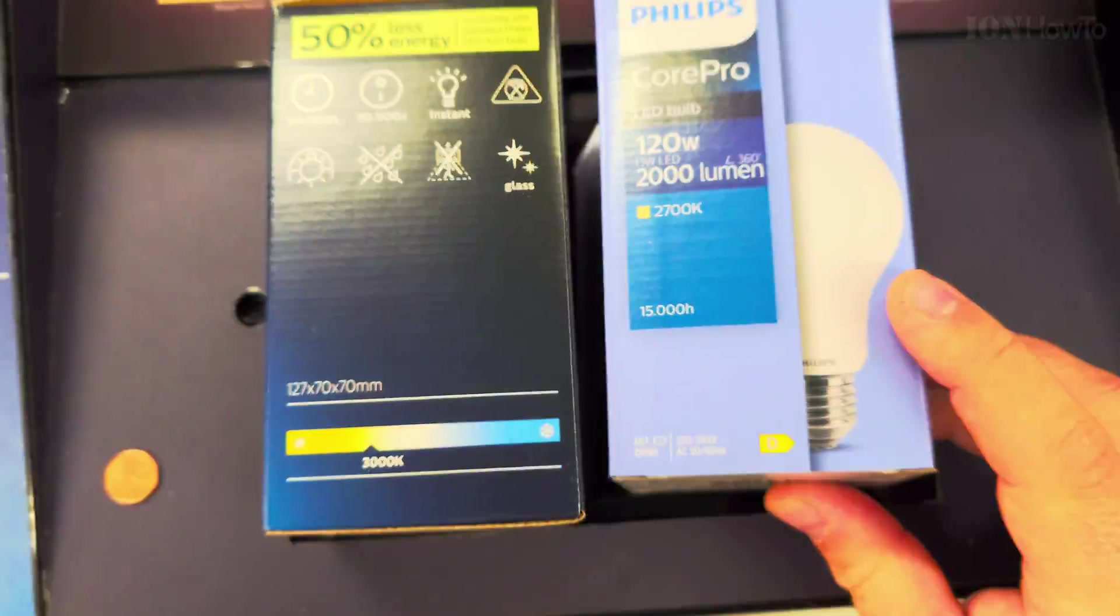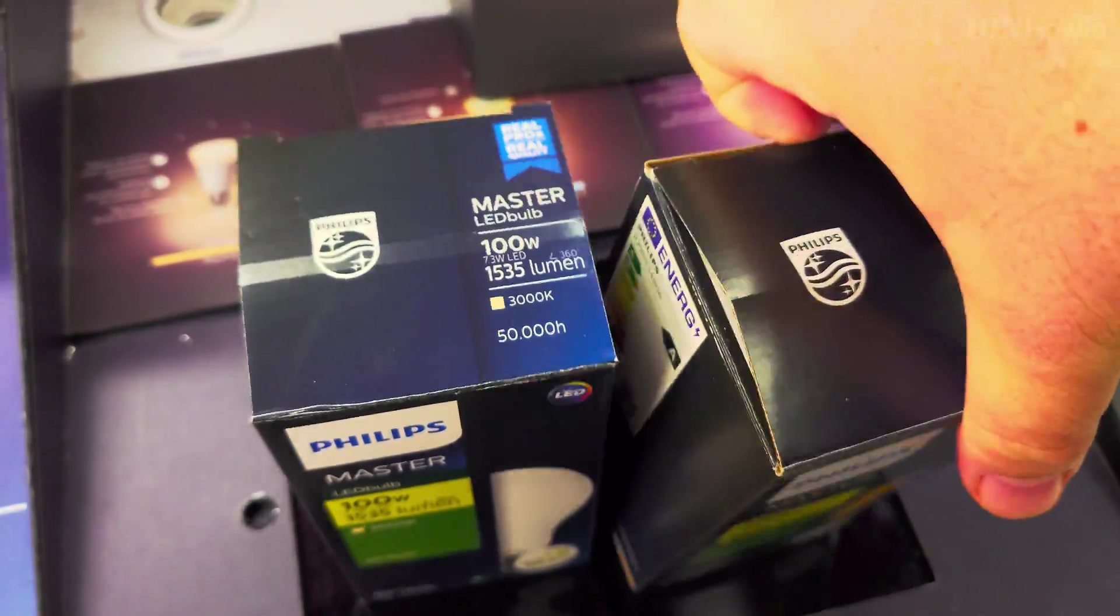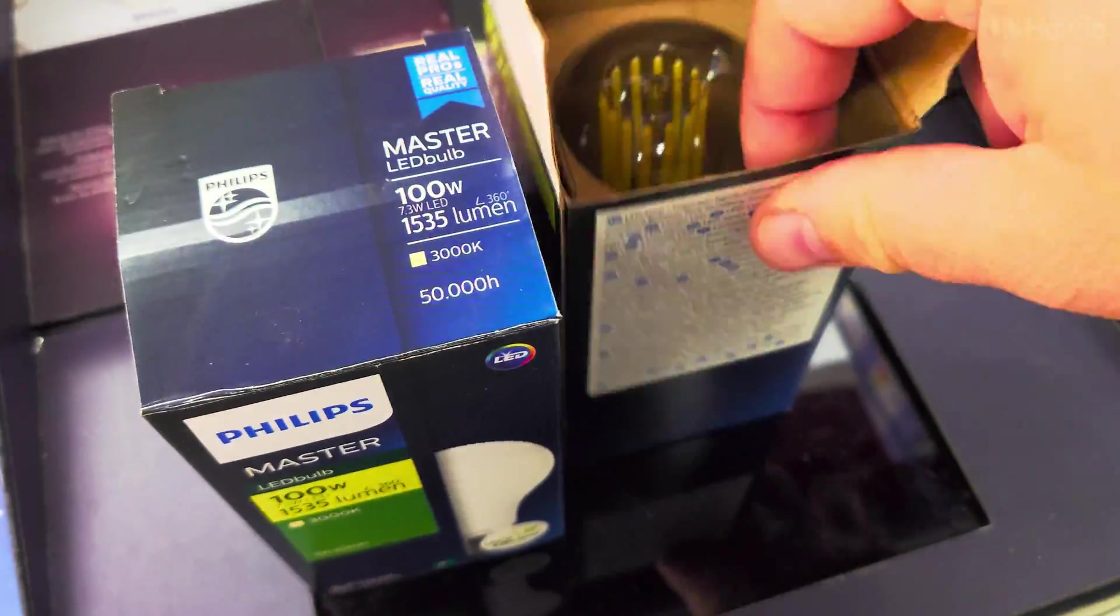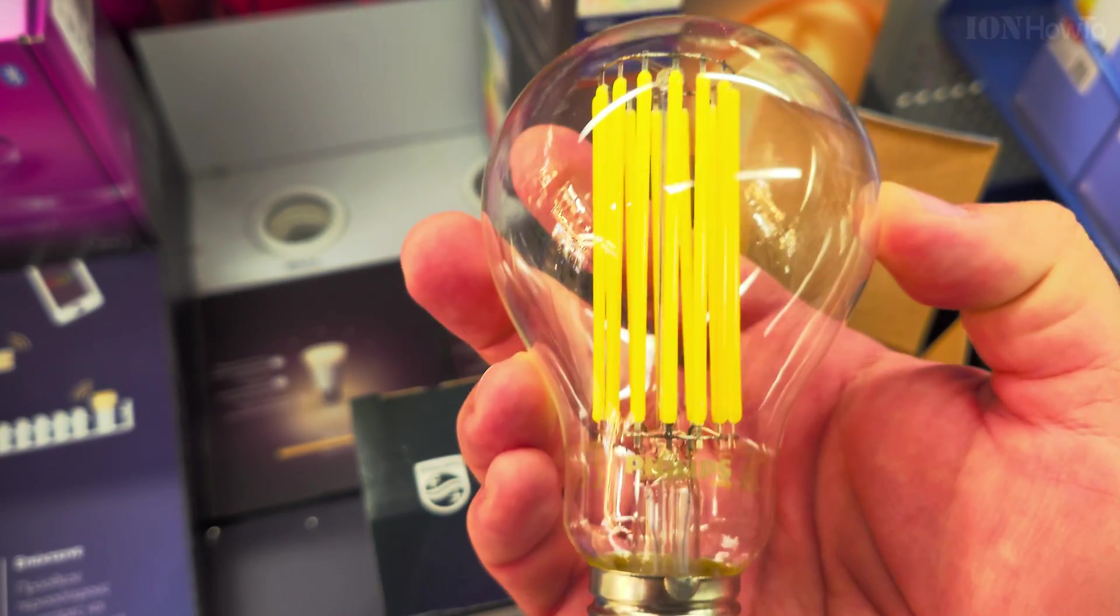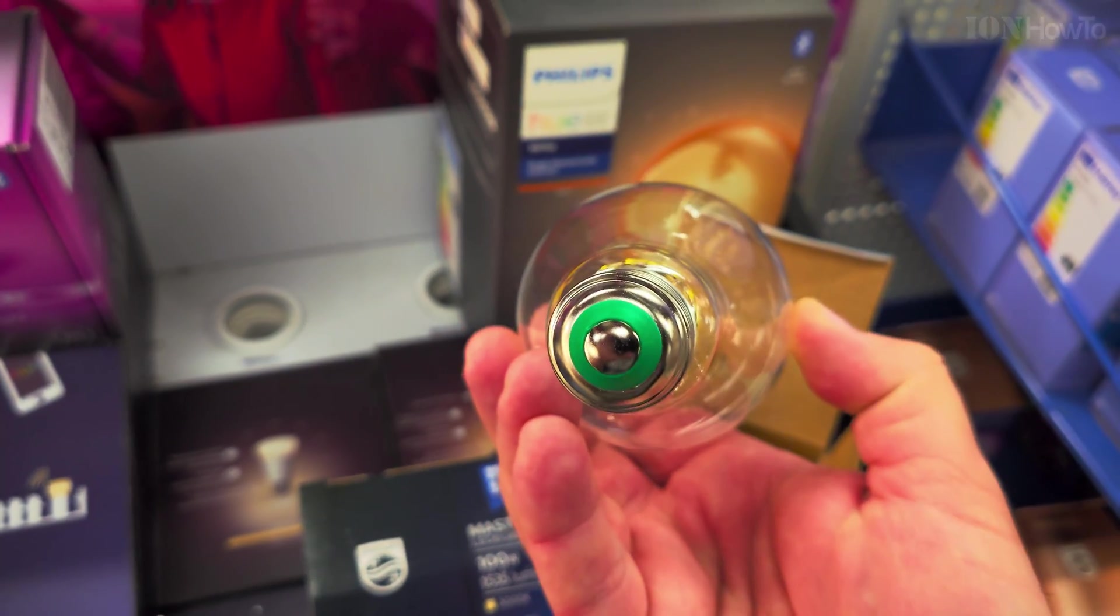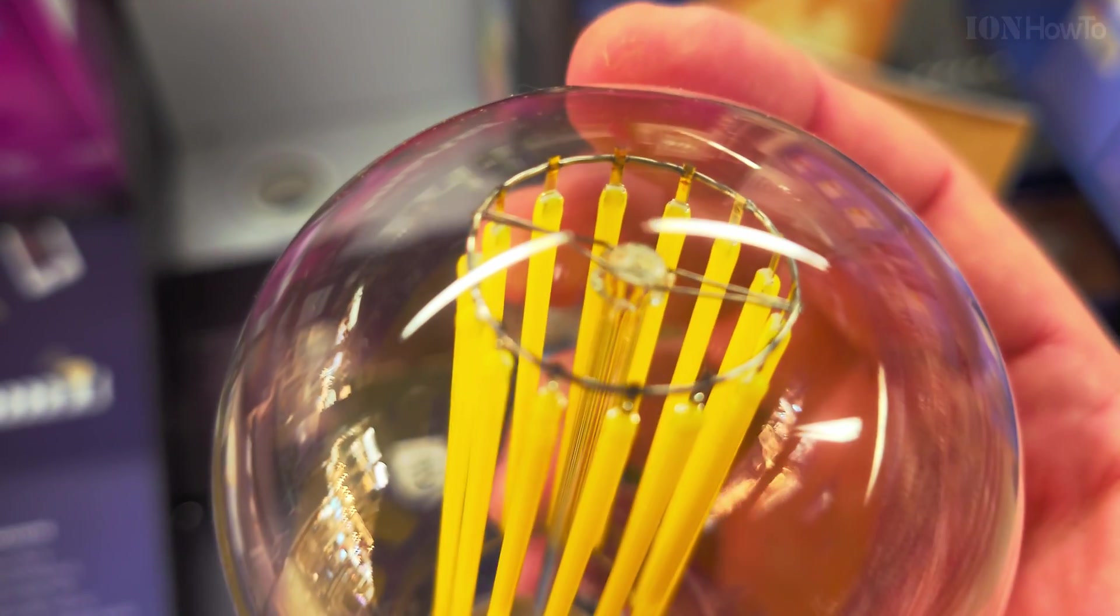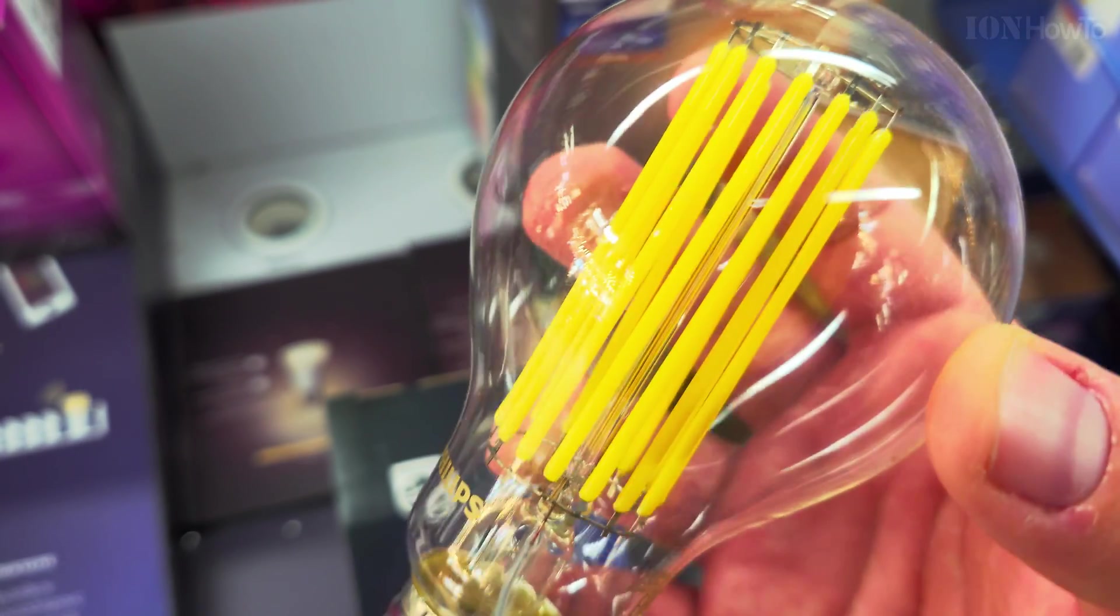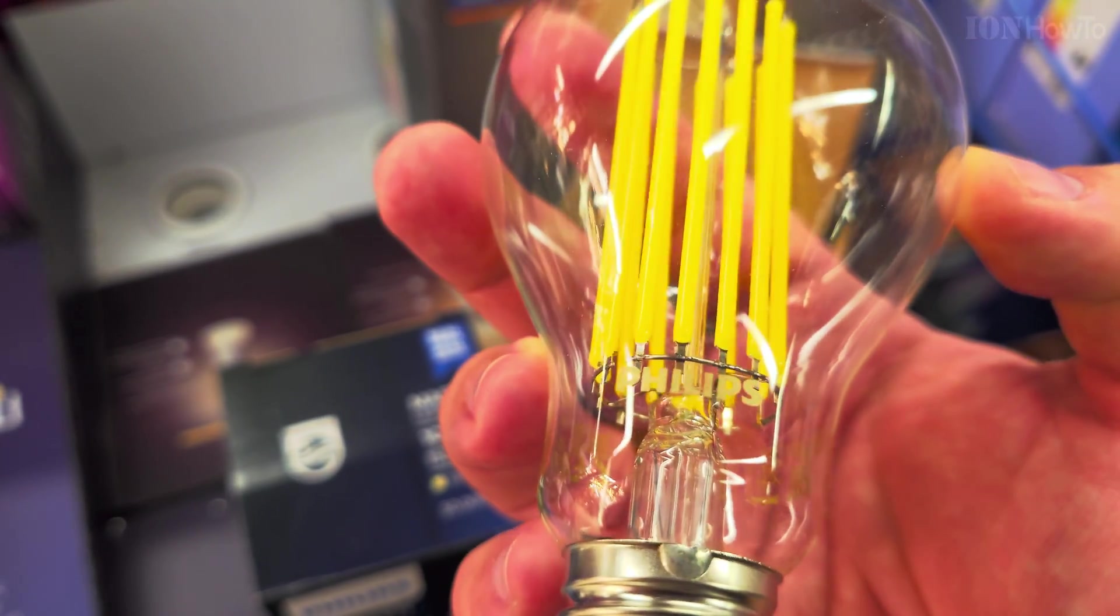It has more watts than the warm white for the Core Pro. The Core Pro has 2000 lumens for a lot of watts, that's why it's not efficient. The Master has 1535 so it's quite a difference. The Master is much more efficient and looks great.